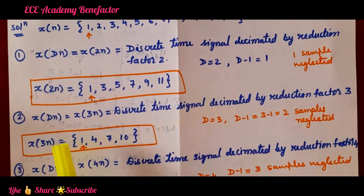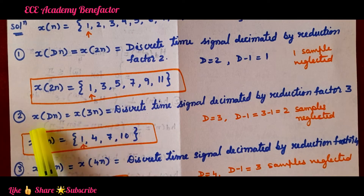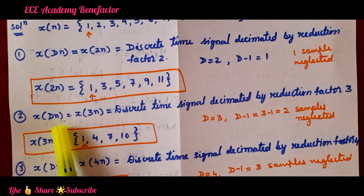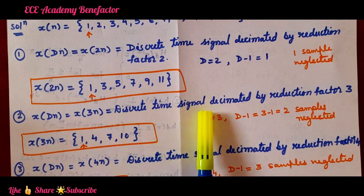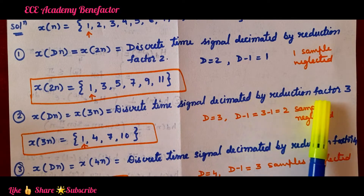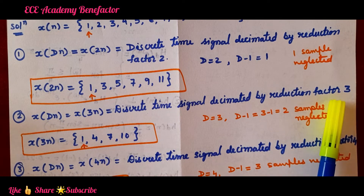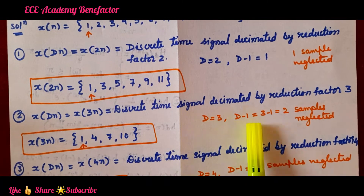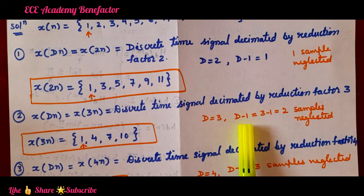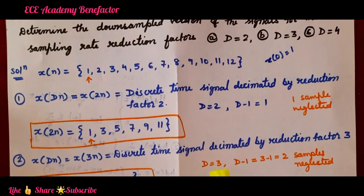Next, we find the down sampled signal by 3. The down sampled signal is x(Dn) equal to x(3n), which is a discrete time signal decimated by reduction factor 3. For D equal to 3, we neglect D minus 1 equals 3 minus 1 equals 2 samples between retained samples.